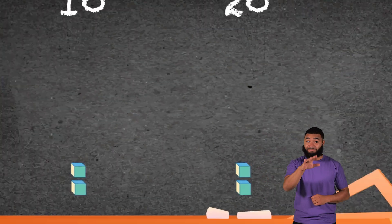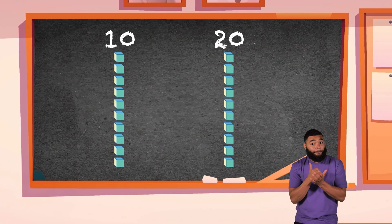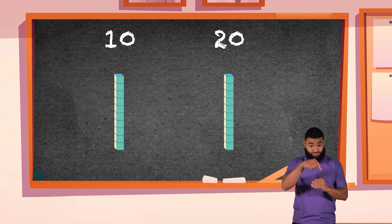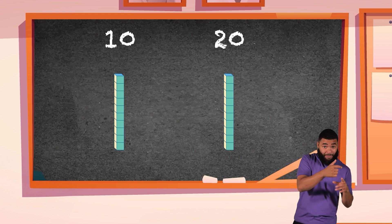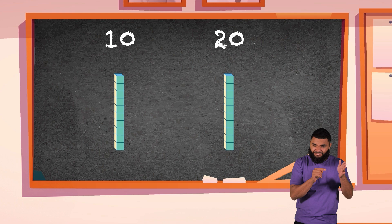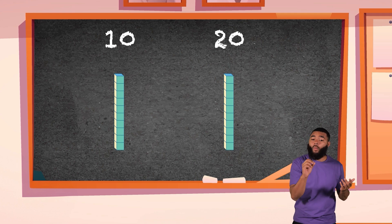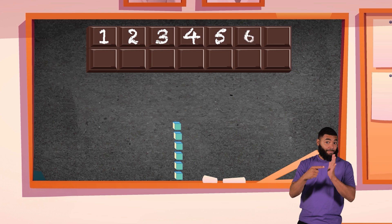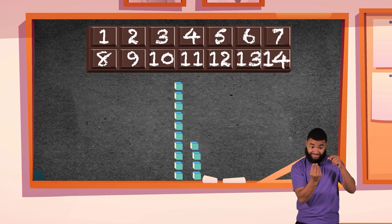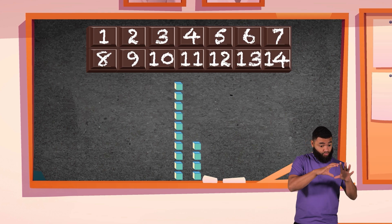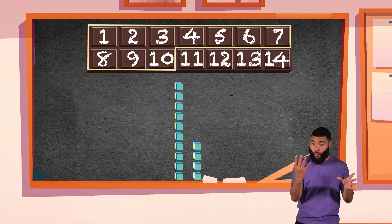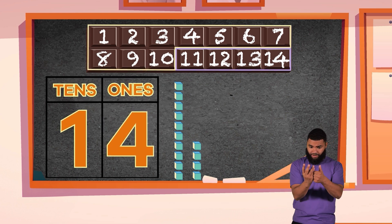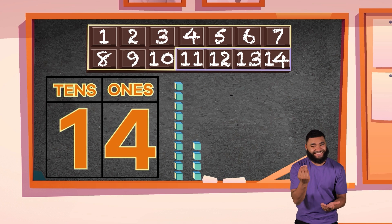Great job! Here's a little fact to help you count and to add. This group of numbers are all made up of one group of 10 plus some leftover units, or ones. Let's look at the number 14 as an example. As you can see, 14 is made up of one group of 10 and four ones. One 10 plus four ones equals 14.